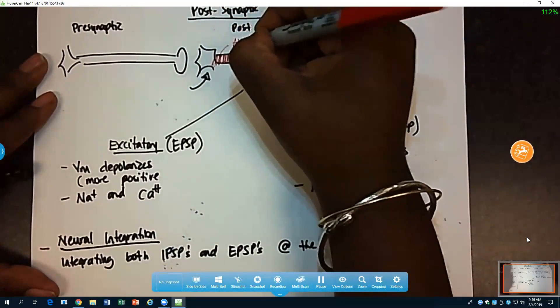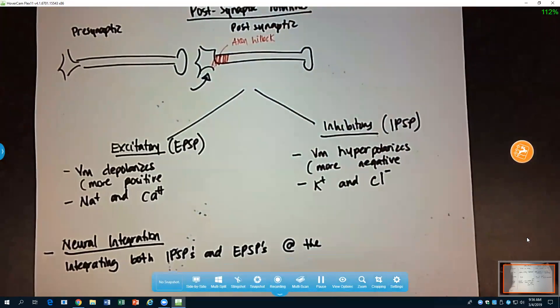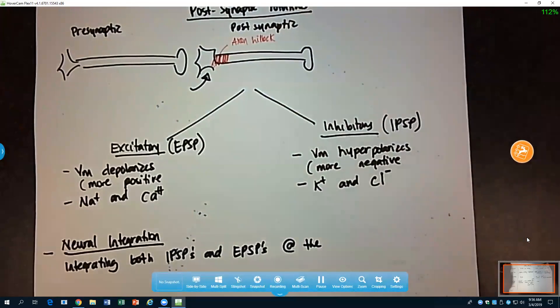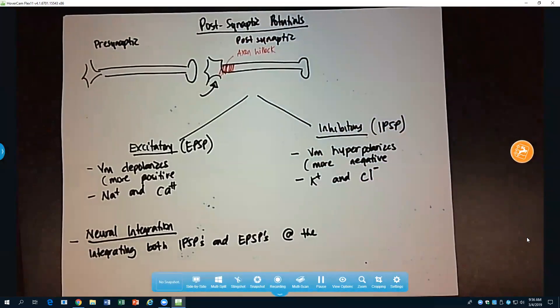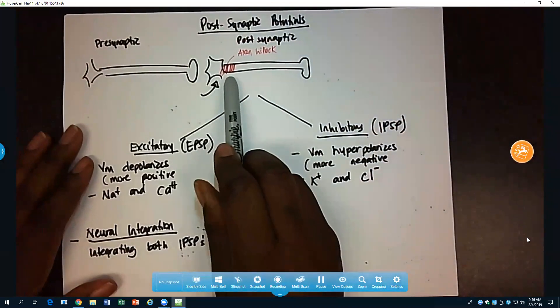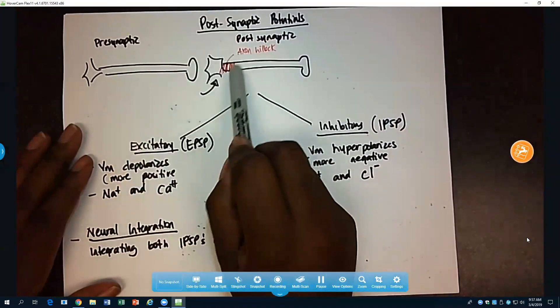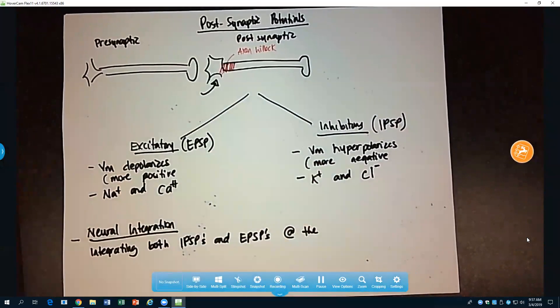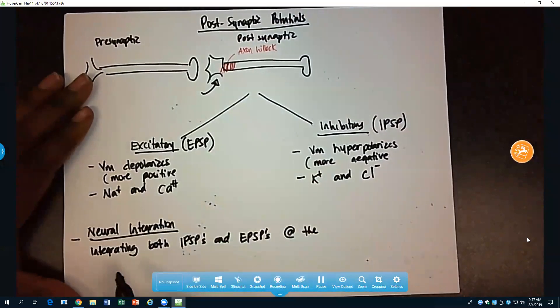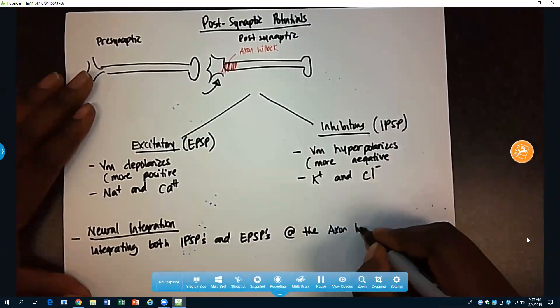Right, the axon hillock is where we integrate all of these signals. Right, we add up the inhibitory post-synaptic potentials and the excitatory post-synaptic potentials, and this is where we determine whether or not this second neuron will fire another action potential. Right, depending on what is happening or the membrane potential specifically at the axon hillock. All right, so integrating both the IPSPs and the EPSPs at the axon hillock.